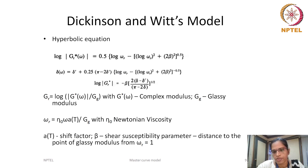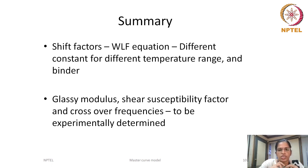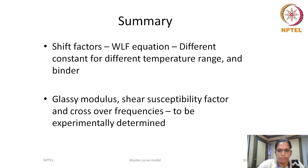We have seen three different master curves: two use a relaxation spectrum and one uses a shear susceptibility factor. To summarize, the WLF equation was commonly used to predict shift factors for master curve construction, but the constants C1 and C2 are found to be different for different temperature ranges and also vary with binder. There is no surprise if C1 and C2 differ from the universal constant — it depends on the binder and the temperature range of interest. The glassy modulus, shear susceptibility factor, and crossover frequency are to be experimentally determined and used in fitting the master curve.